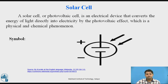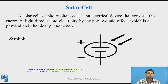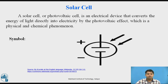Solar cells, also called photovoltaic cells, are electrical devices that convert the light falling on them into equivalent electricity or current. The voltage remains relatively constant while the current is directly proportional to intensity — as light intensity falling on the solar cell increases, current also increases. This is a physical and chemical phenomenon observed in the solar cell, and its symbol resembles a battery symbol with positive and negative terminals, with light falling on it.